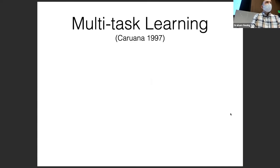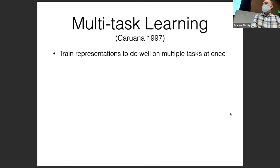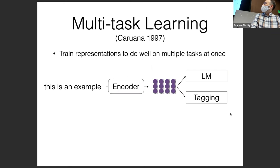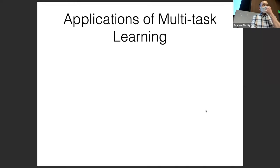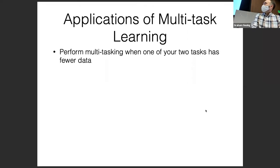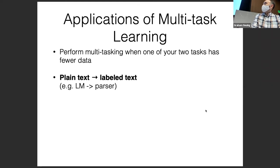Multi-task learning — we already talked about this before. Basically we train a model or representations from a model to do well on multiple tasks at once. We have an example going into an encoder where we train representations to be good at language modeling or tagging. We talked about performing multi-tasking when one of your two tasks has fewer data, which is a normal application scenario. Last time we talked mainly about doing things from plain text to labeled text — a language model with a masked language modeling objective applied to some downstream tasks where we didn't have as much data, like parsing.